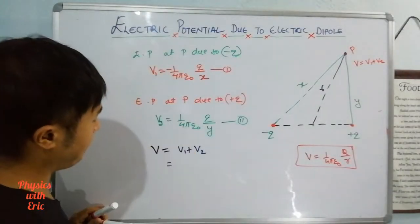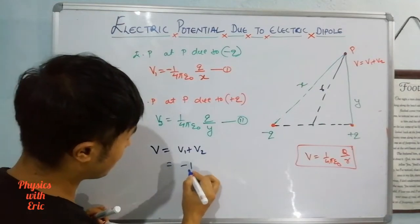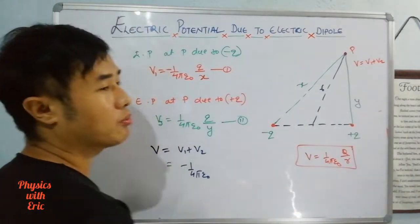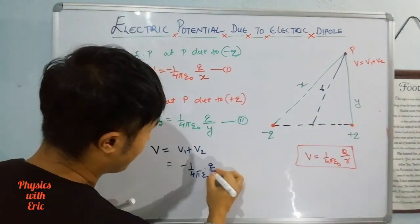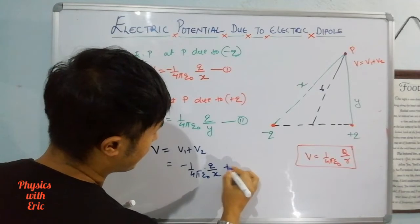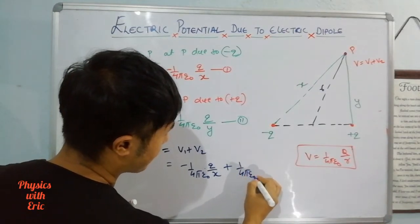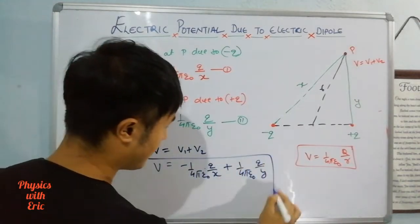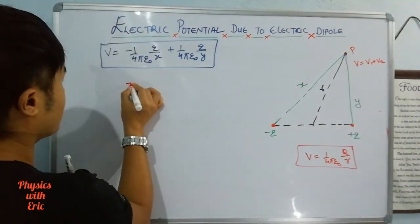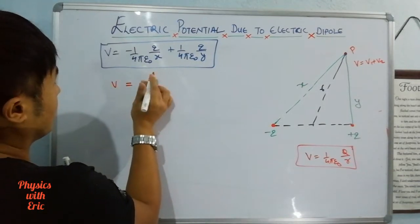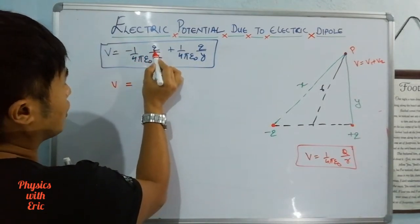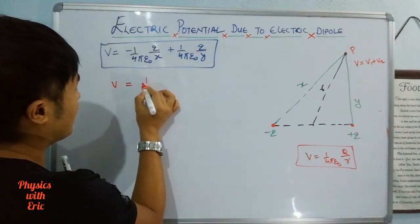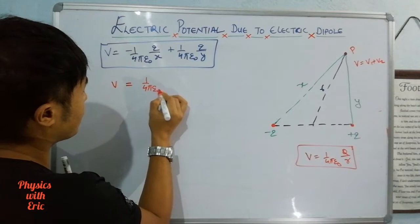I'll simply put in the values. V1's value is minus 1 by 4 pi epsilon naught times Q by x, for free space or vacuum or air. Plus 1 by 4 pi epsilon naught times Q by y. In the next step, we take out the common factor 1 by 4 pi epsilon naught times Q.